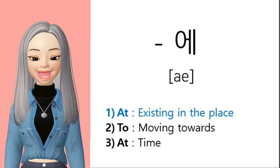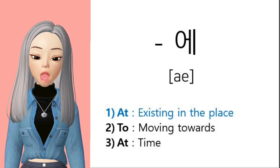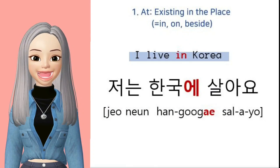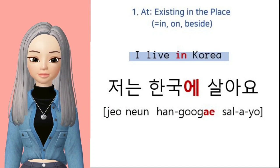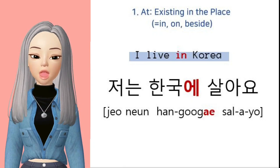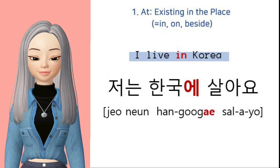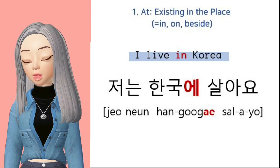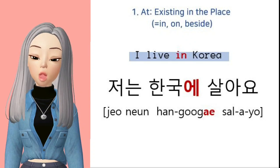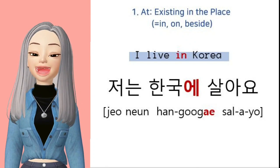Let's look at the first meaning of 에. It is like 'at' in English — it's the case when you're talking about something or someone existing in the place. For example, in the sentence 'I live in Korea,' you would use this 에. Remember, 에 sticks behind the place. So here, you would say 저는 한국에 살아요. You can also change the country — for example, 저는 필리핀에 살아요, or 저는 인도에 살아요.